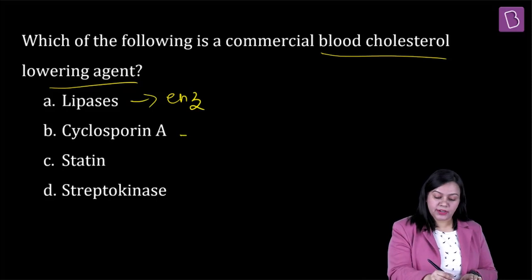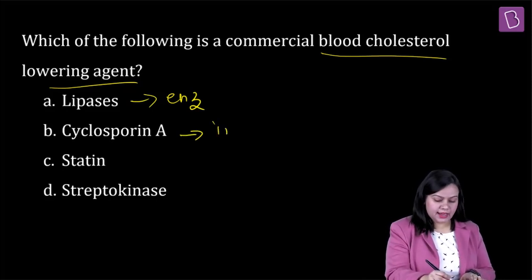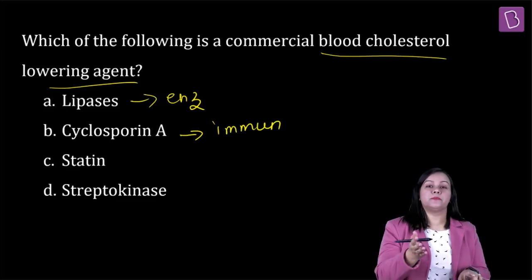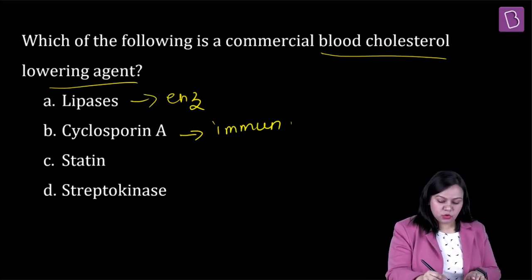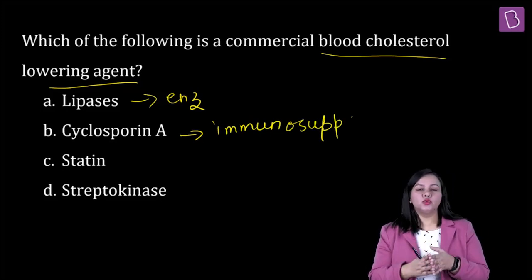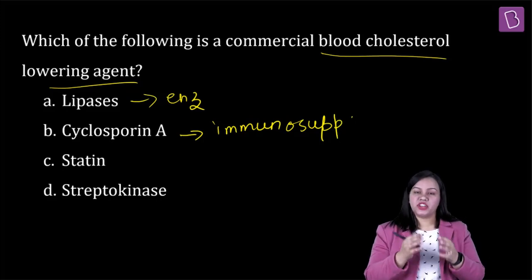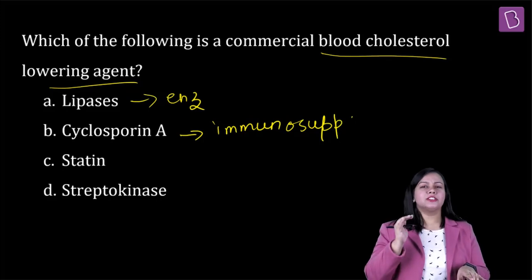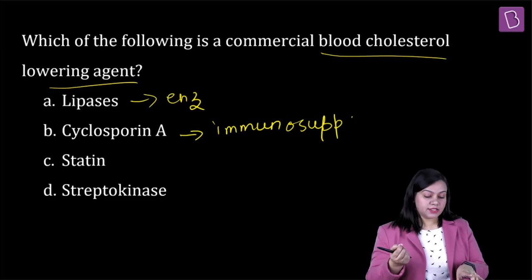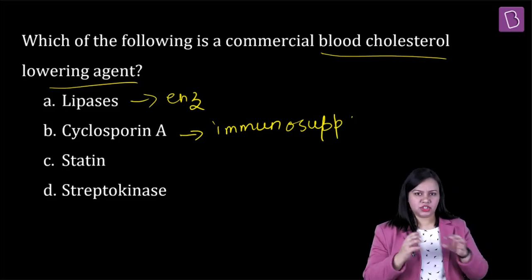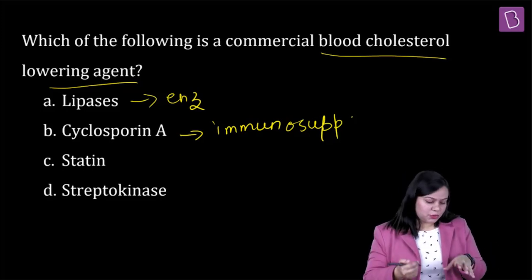Then we go on to cyclosporine A. What is cyclosporine A? It's basically an immunosuppressant or immunosuppressing agent. What is this used for? It's basically used for preventing the rejection that happens usually post-allogeneic organ transplant. So this is an immune system suppressing agent. This is basically a non-ribosomal peptide. I'll come to the discussion part just in a while after breaking the answer to you.